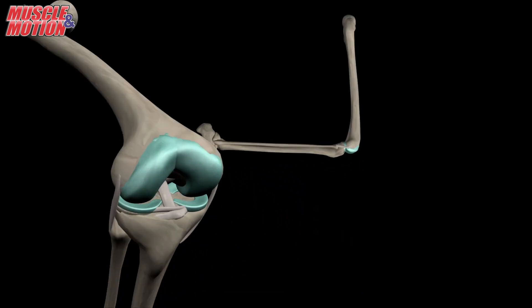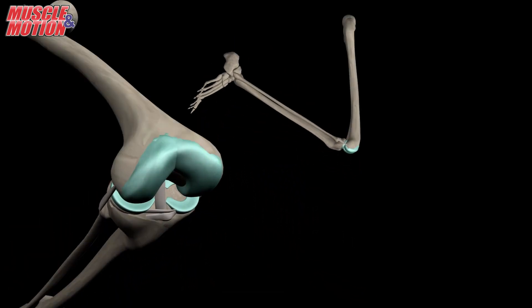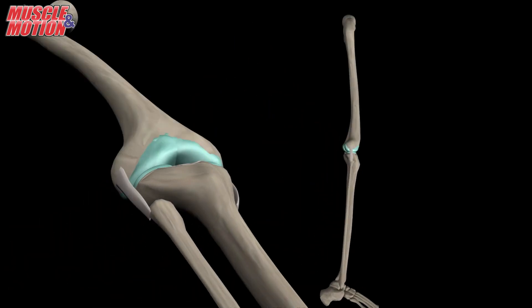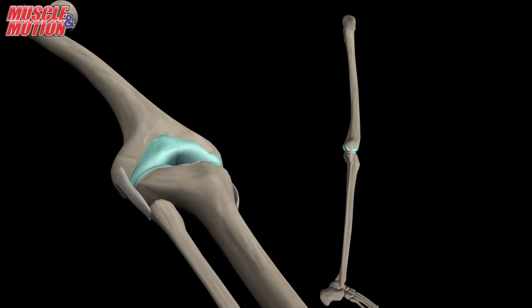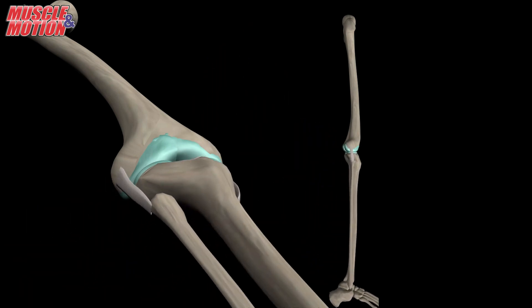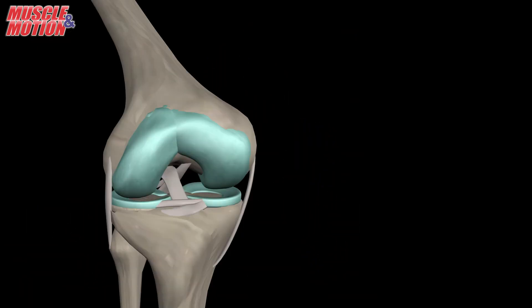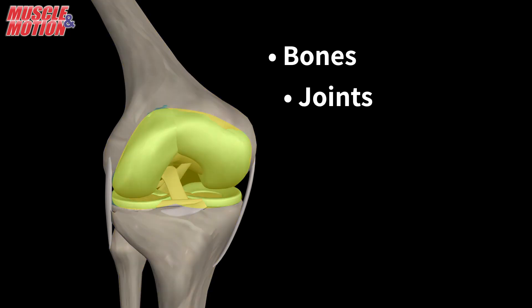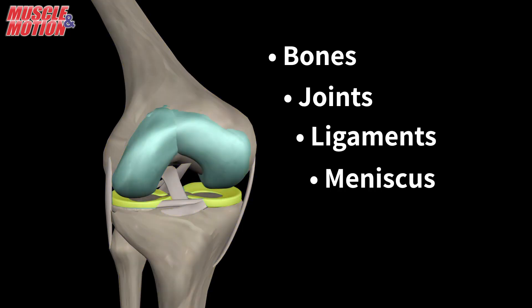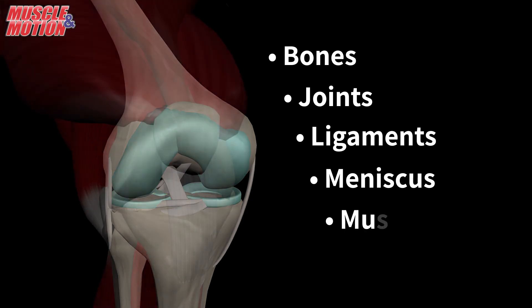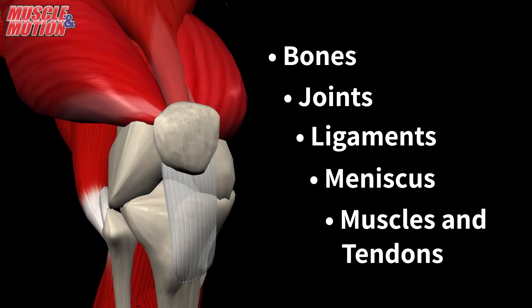In summary, we talked about the knee joint function and movement. We divided the different structures into a few main categories: bones, joints, ligaments, meniscus, and lastly muscles and tendons.